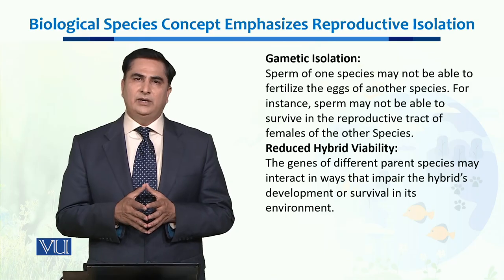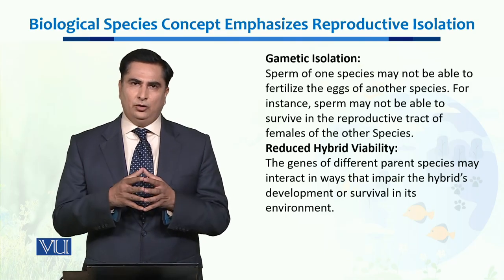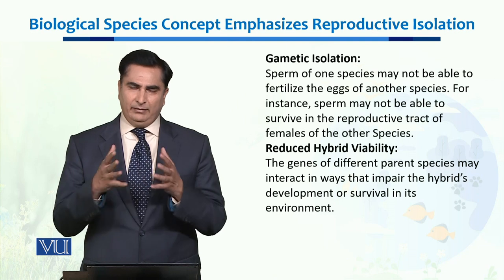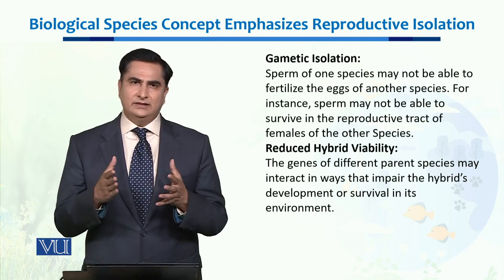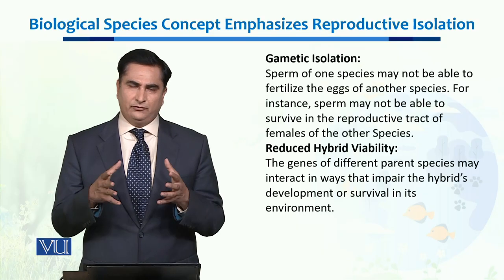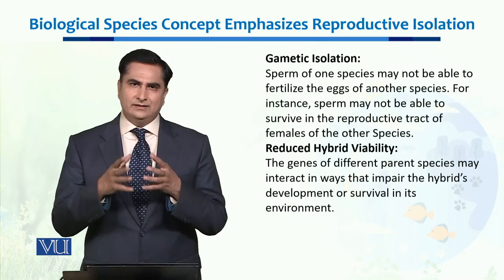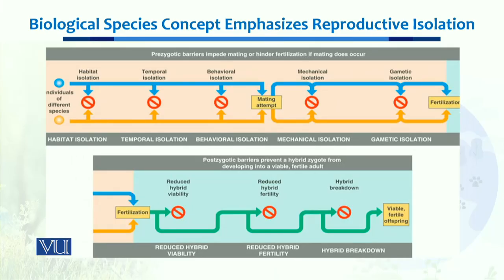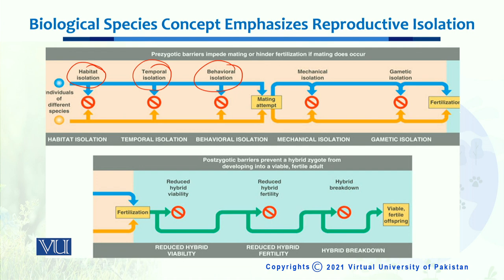Now, reduced hybrid viability means that even if gametes — sperm and egg — do cross and fuse with each other, their genes interrupt each other's performance and stop the production of a viable hybrid species. This helps keep different species intact. As you can see in the chart, all these isolations act as different reproductive barriers and stop the mixing of two different species.